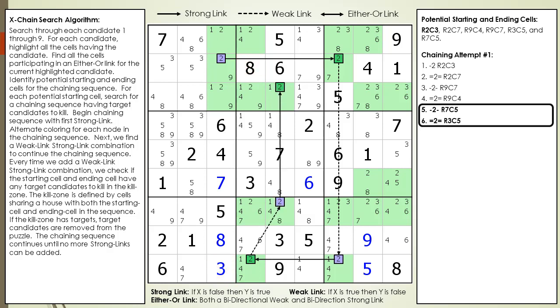We add the next weak link and strong link combination as shown. We have a weak link between cell 9, 4 and cell 7, 5, and we have a strong link between cell 7, 5 and cell 3, 5 as shown. This time we do have a target candidate to kill in the kill zone.